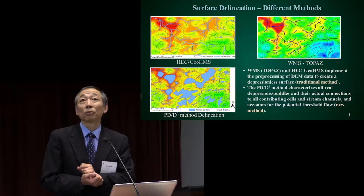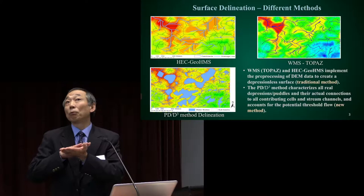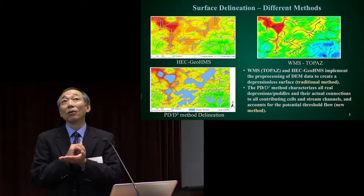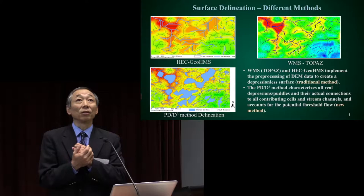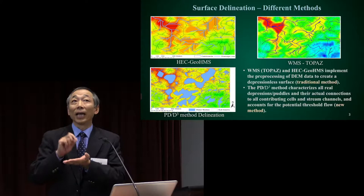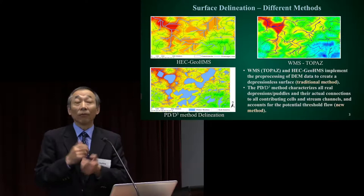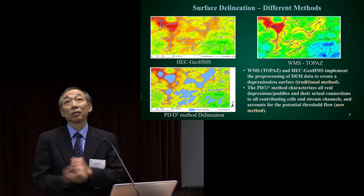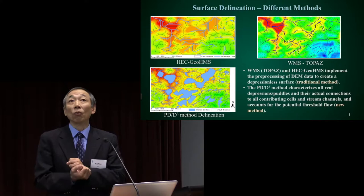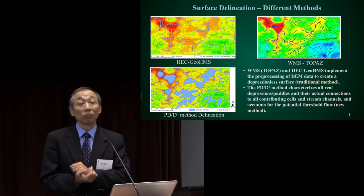The problem with this general modern practice and traditional method is the pre-processing step before modeling. For this kind of modeling, we cannot deal with depressions. If you have any depressions on the land surface, pre-processing fills all depressions to develop a depressionless DEM, and hydrological and water quality modeling will be based on that depressionless DEM. For the PPR Prairie Pothole Region, there are many depressions, pothole lakes, and wetlands — clearly this method will not work.